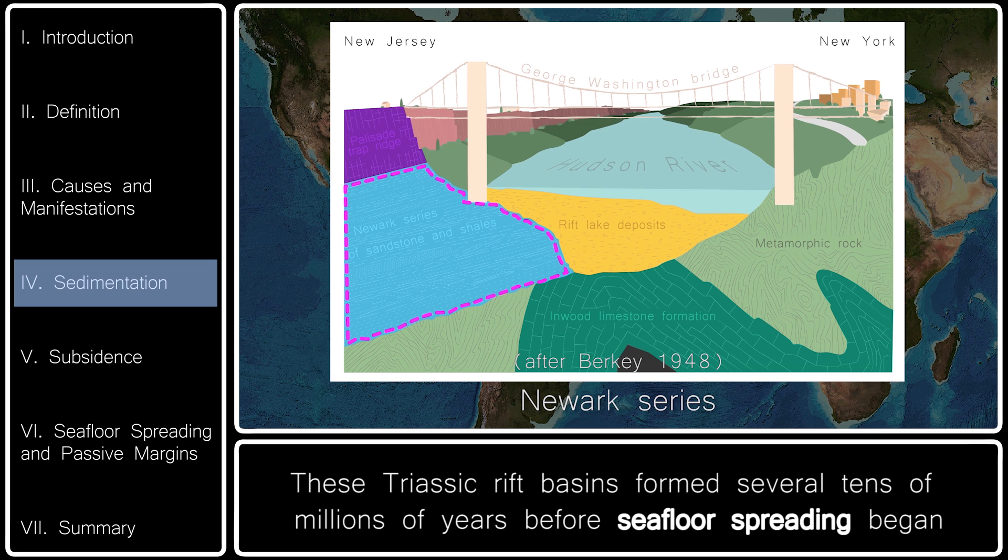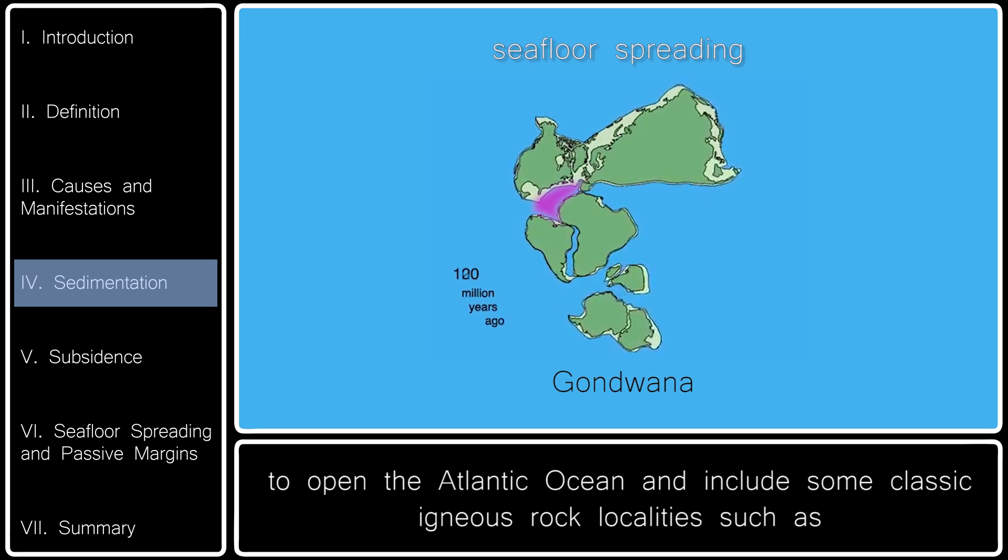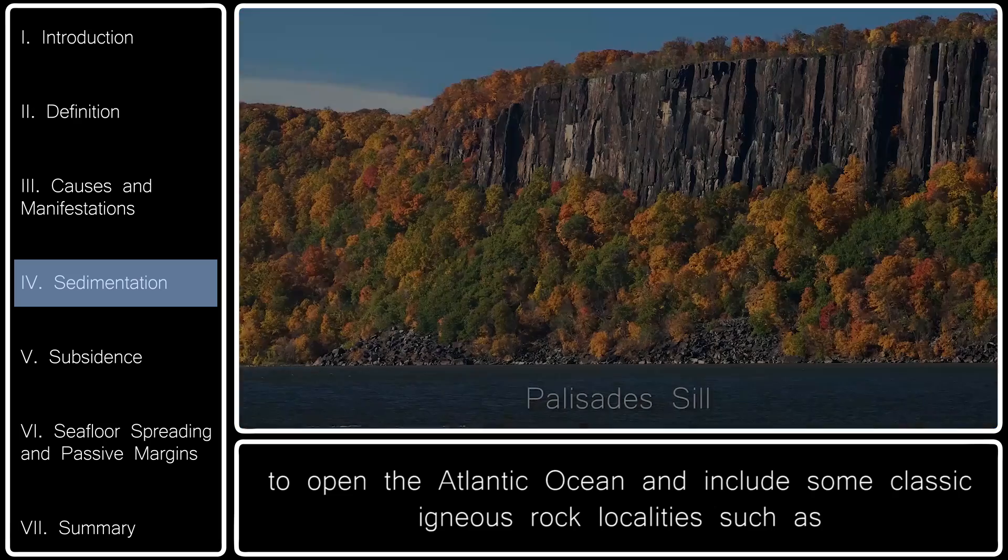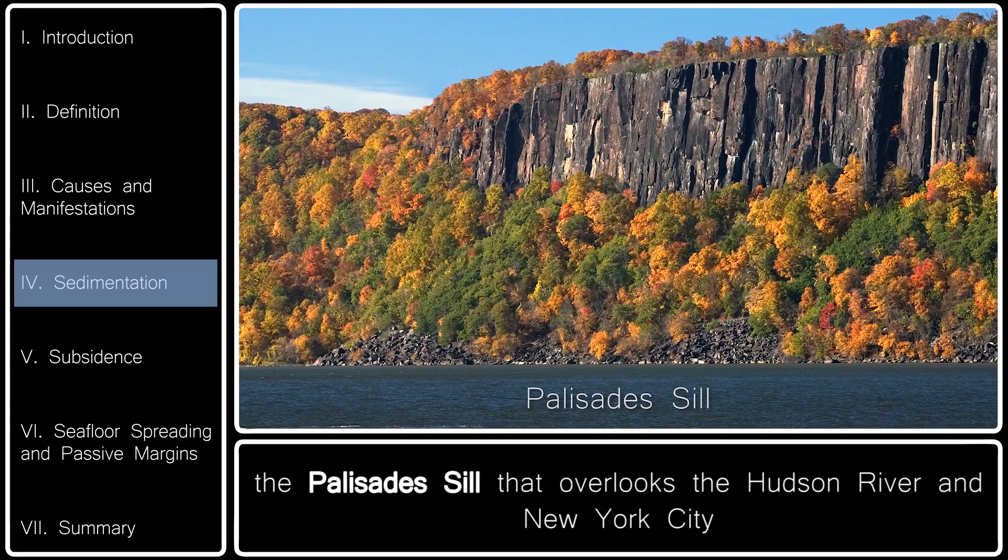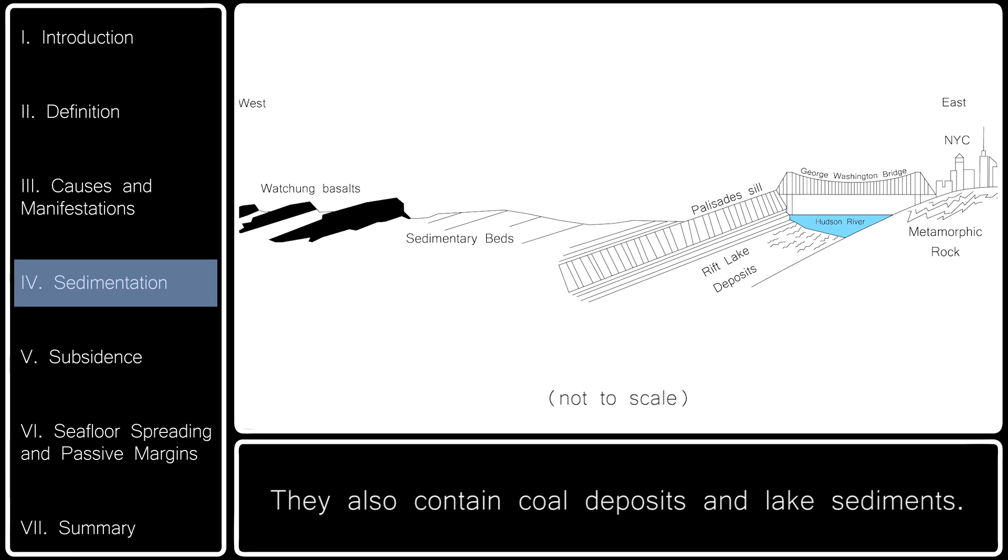These Triassic rift basins formed several tens of millions of years before seafloor spreading began to open the Atlantic Ocean and include some classic igneous rock localities, such as the Palisades Sill that overlooks the Hudson River and New York City, and the Watchung Basalts of New York and New Jersey. They also contain coal deposits and lake sediments.